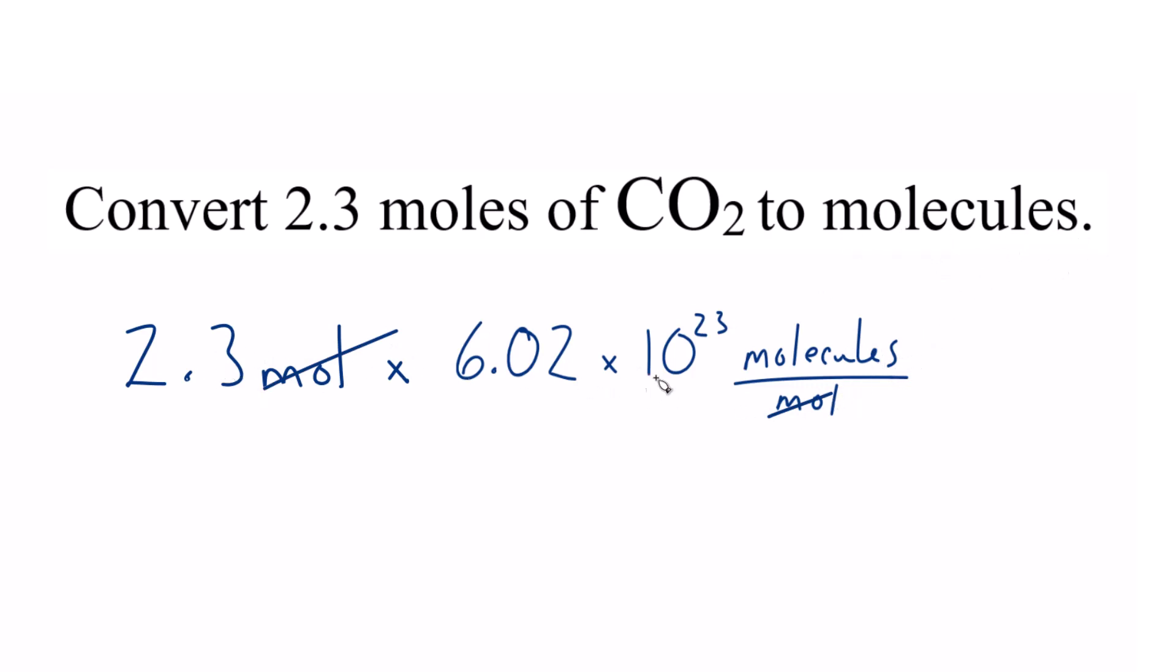So 2.3 times 6.02 times 10 to the 23rd, that gives us 13.8 times 10 to the 23rd molecules of CO2. And you could write this as 1.38 times 10 to the 24th. That would be the same thing.